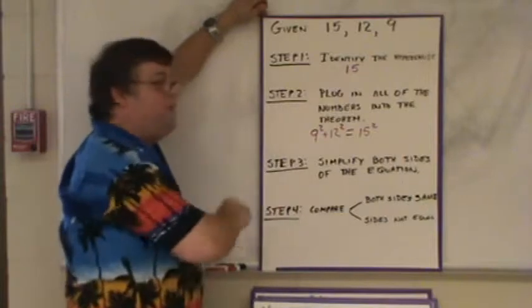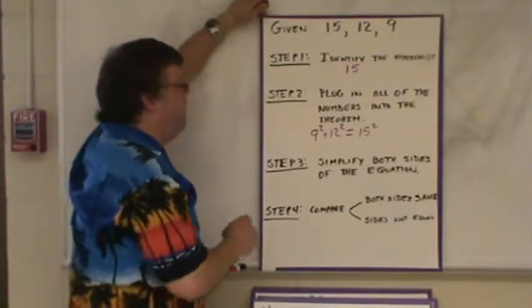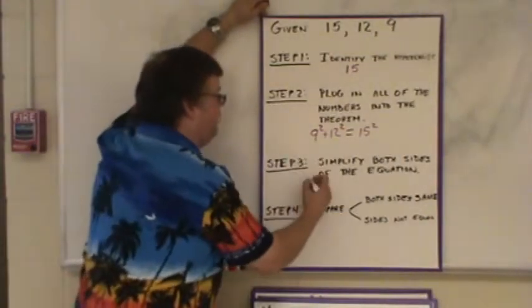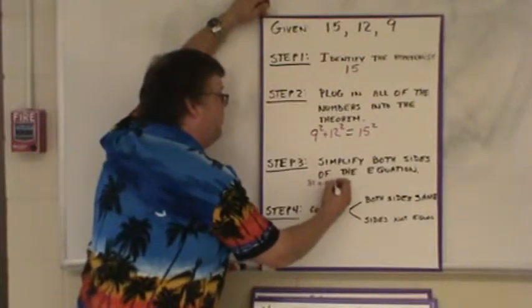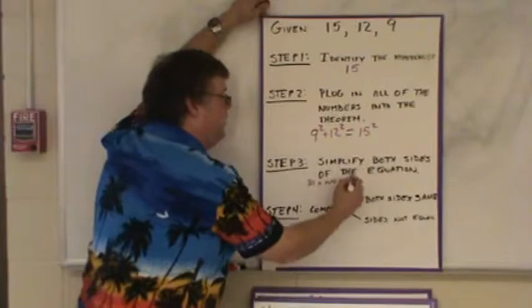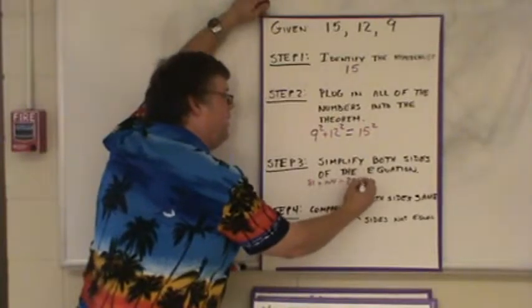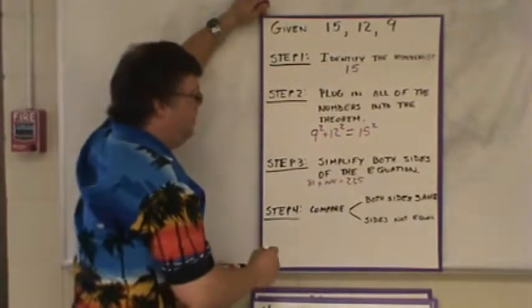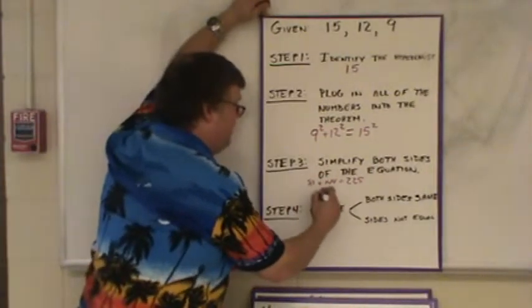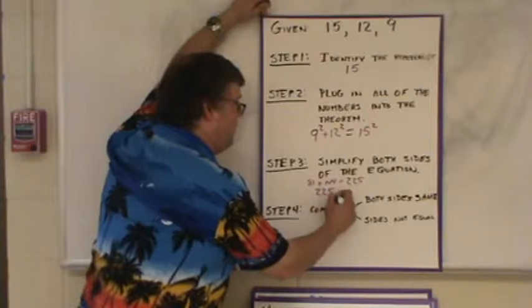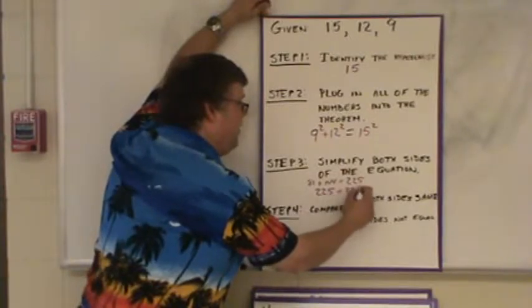Step three, simplify both sides of the equation. Which means I'm going to actually square both of those. That gives me 81 plus 144. 15 squared is going to give me 225. I'm not completely simplified yet, because I still have to add these two numbers. When I add them together, I get 225 equals 225.